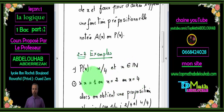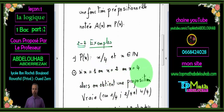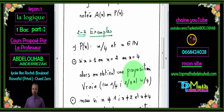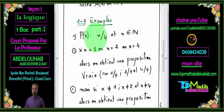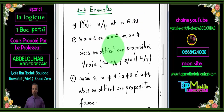Mais si on s'éloigne de ces trois cas, c'est-à-dire si on donne une valeur autre que 1, 2 et 4, alors on va trouver une proposition fausse. Par exemple, si on remplace x par 3, 3 ne divise pas 4, donc j'obtiens P(3) qui est « 3 divise 4 », une proposition fausse. Voilà la différence entre une fonction prépositionnelle et une proposition.